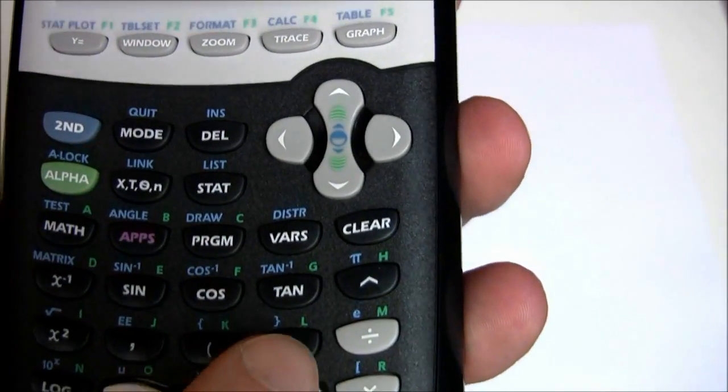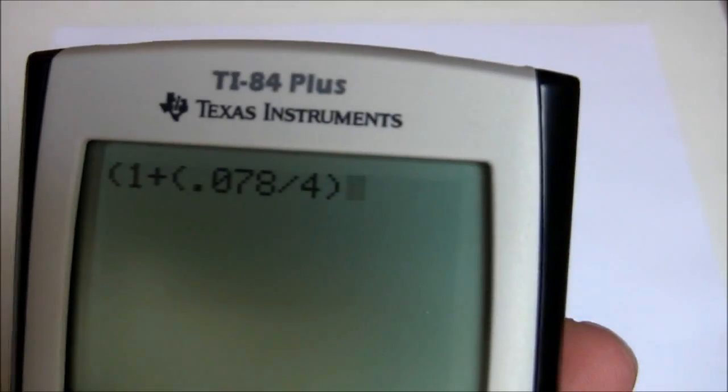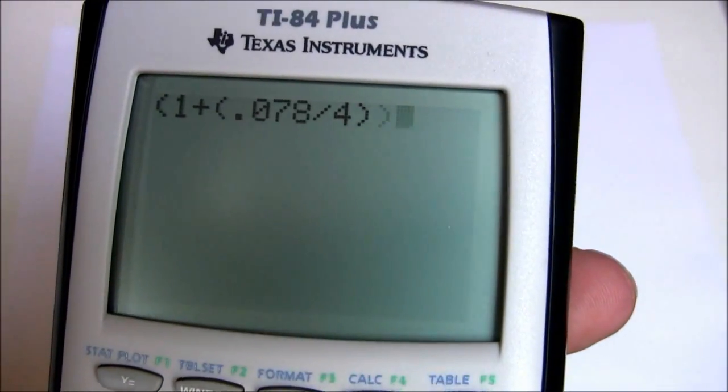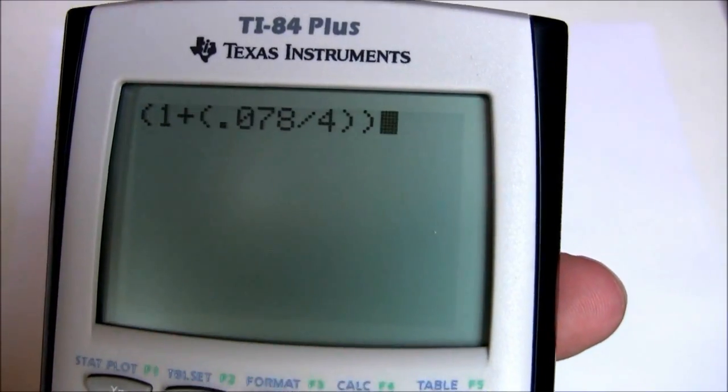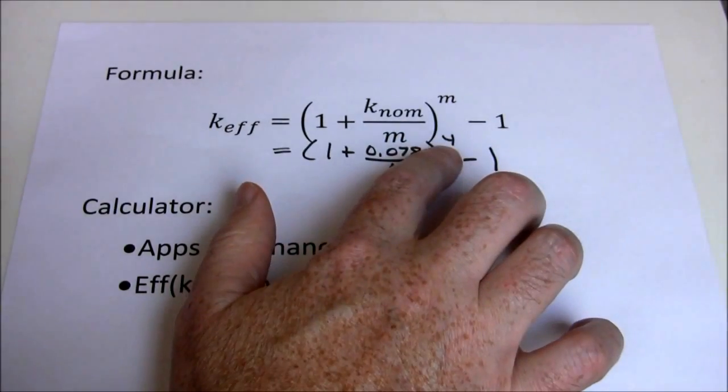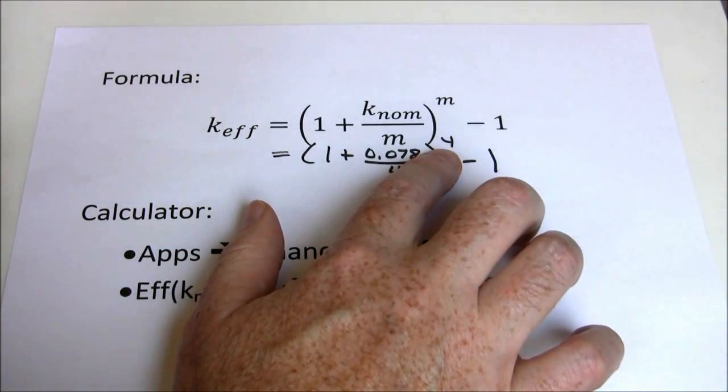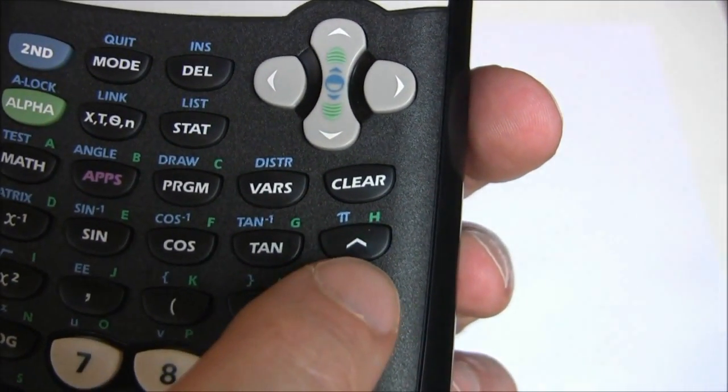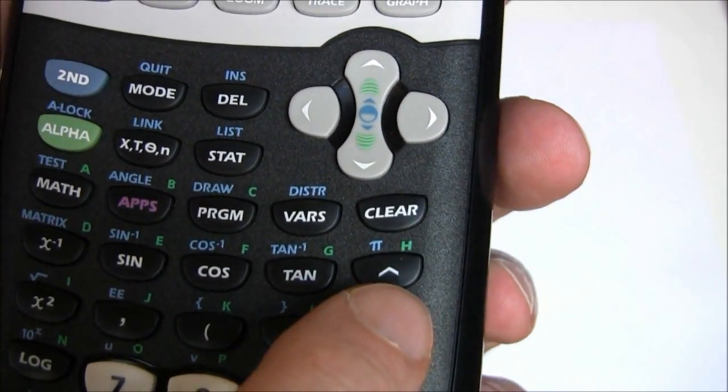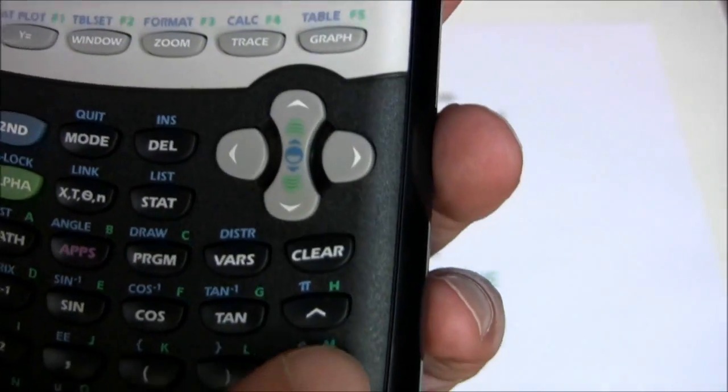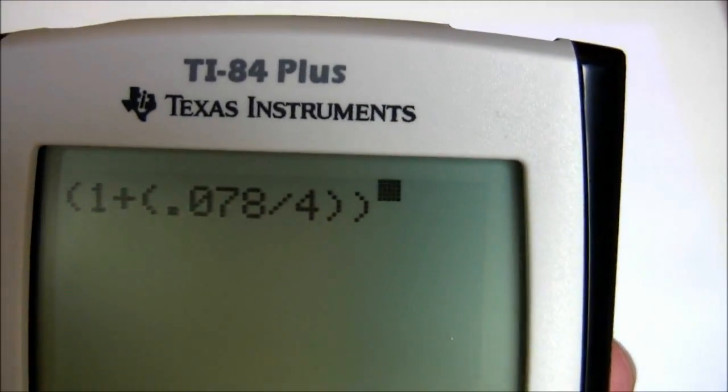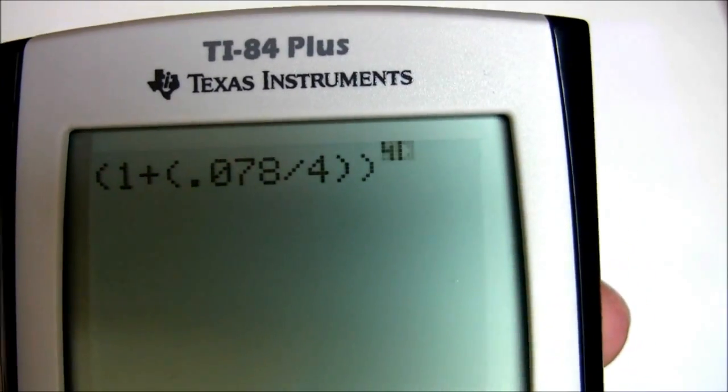I want to make sure I get that division as 0.078 divided by 4. Close that parenthesis. Now I want to have a second close so I can raise that entire quantity to the exponent. Raising that to the 4th power. Quarterly is 4 quarterly compounding periods per year. In your Texas Instruments 83 or 84 you should see a little carat operator for an exponent. So I want to press that.